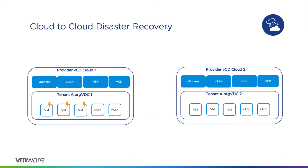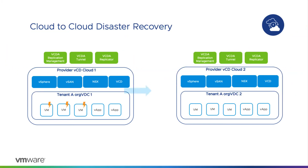Apart from on-premises to cloud migrations and disaster recovery, you can also do cloud-to-cloud disaster recovery using VMware Cloud Director Availability. It's a great fit for providers who run multiple cloud sites and want to extend their customer offerings with such a service. The requirement will be to have a VCDA tunnel, replicator, and cloud replication management in all cloud sites with the proper configurations. From the tenant perspective, it is very simple — they just operate with the VCDA UI and follow the steps for workload protection.